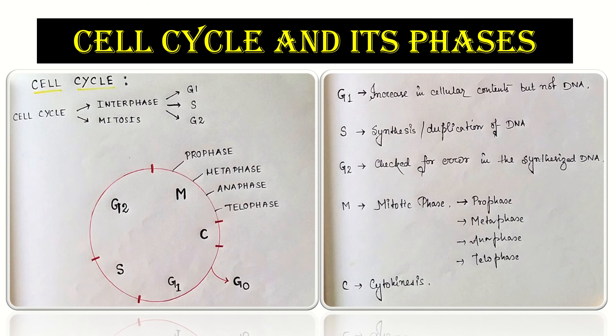Now here we will see briefly what happens in these different phases. We will start with G1. In G1 what is happening? There is an overall increase in the cellular content but not the DNA. We know other than the DNA there are various components in the cell. These components get duplicated or they increase. This increased content gets divided or gets equally divided into two daughter cells.